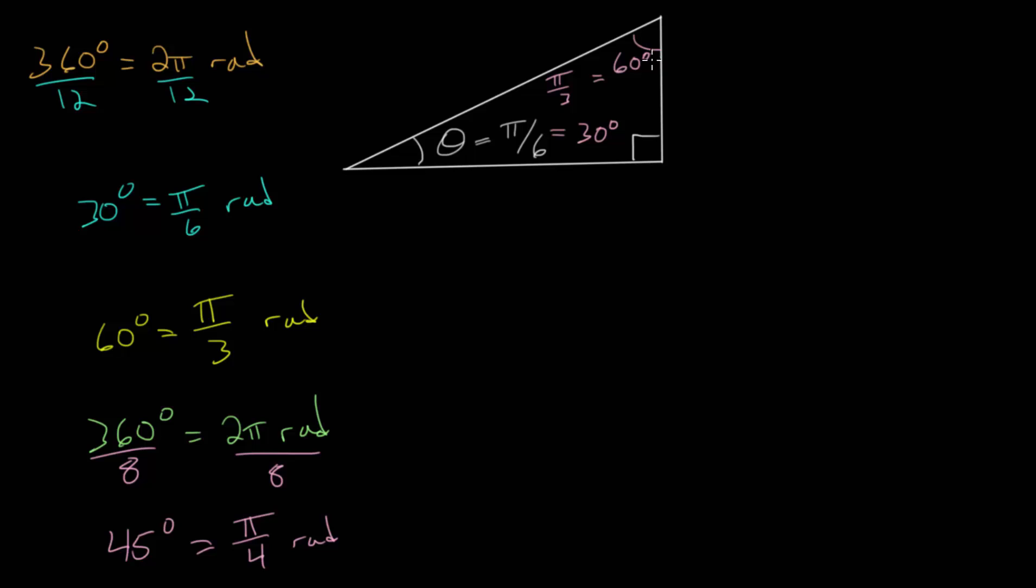So this is a 30, 60, 90 right triangle, which is a special right triangle. And remember that a 30, 60, 90 triangle is really just half of an equilateral triangle. So if we called this side R, then this short side here, which is half of the side of an equilateral triangle, this would be R over 2.